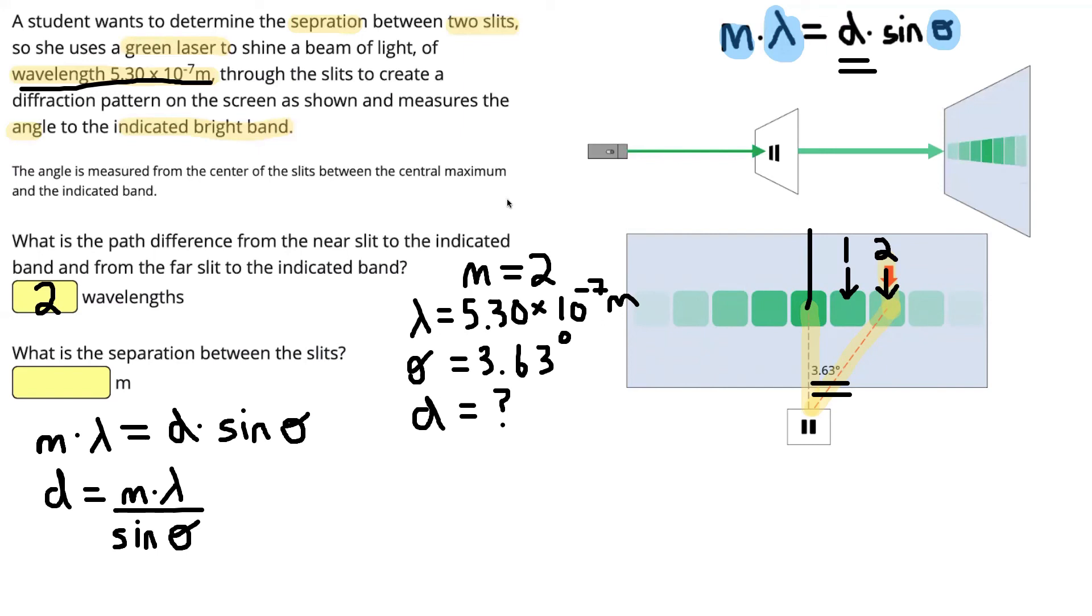That's got my equation rearranged successfully. Now I just need to put my numbers in from the question. So we'll do that now. M is 2, lambda is 5.30 times 10 to the negative 7, and then that's divided by sine theta, where theta is 3.63 degrees.